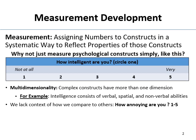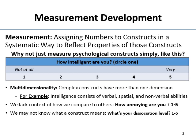Another reason we can't use a single item is that we lack context. If you were measuring how annoying people are, could you just ask 'how annoying are you, 1 to 5' and expect people to have the context to answer accurately? Also, people don't always know what constructs mean — you can't just ask 'what's your dissociation level, 1 to 5?' It doesn't quite work.